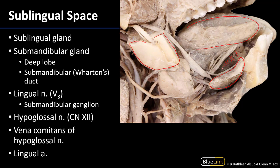We can also see the submandibular gland. The submandibular gland traverses two spaces: the submandibular space holds the superficial portion of the submandibular gland, and wrapping around the mandible we can see the deep lobe. We can also see Wharton's duct moving across and snuggling along the sublingual gland out toward the caruncle distally.